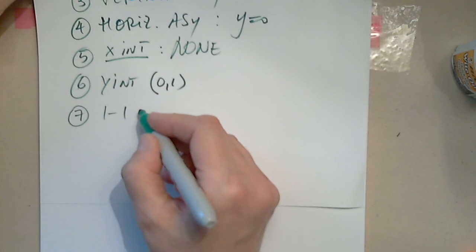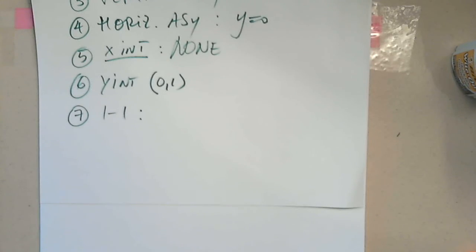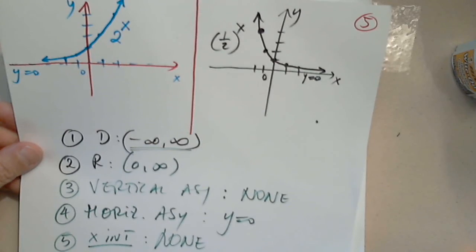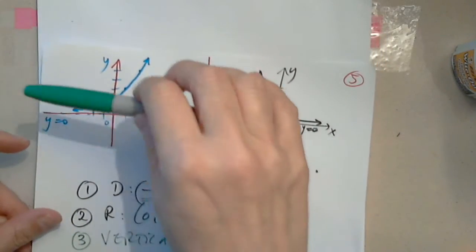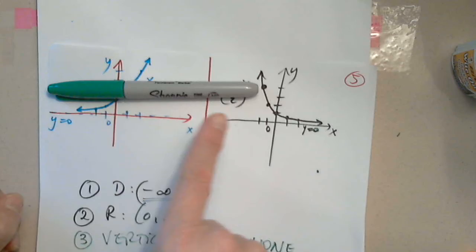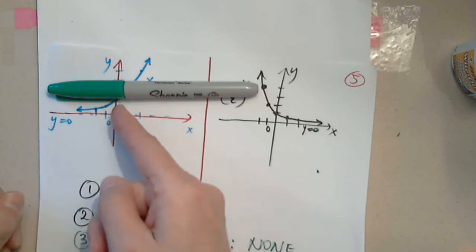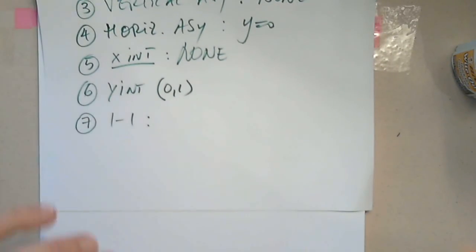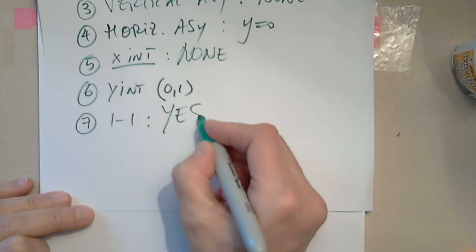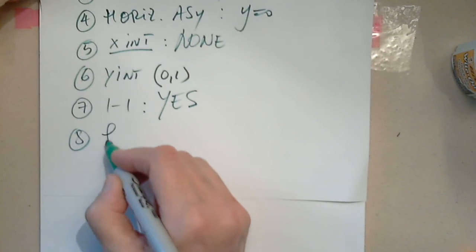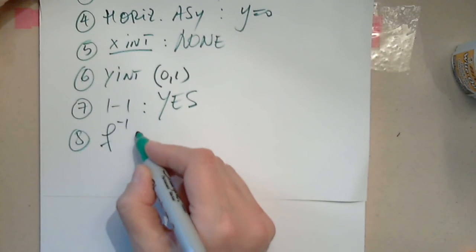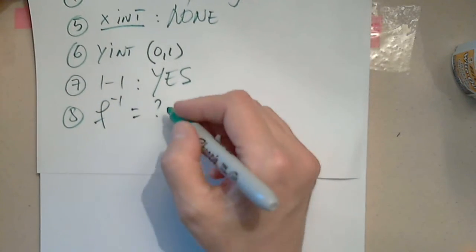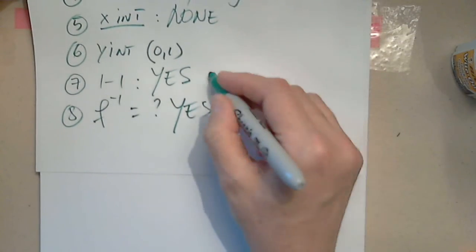Number seven: one-to-one? Yes. By the horizontal line test, every y will have only one x. So both exponential functions are one-to-one. And since they are one-to-one, they have an inverse function — f inverse exists.